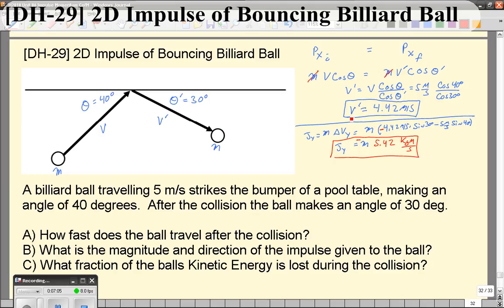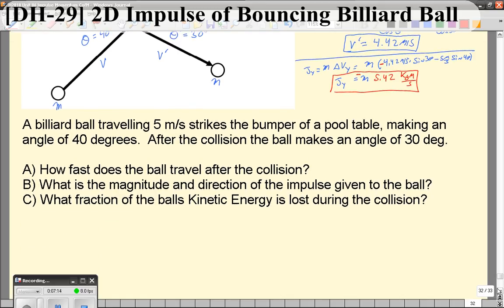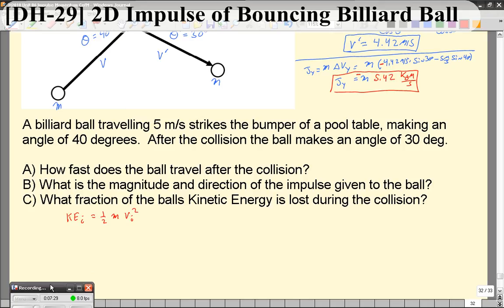We have found the velocity after. The last part of this question asks us to compare the kinetic energy final with the kinetic energy initial. So let's find the KEI is going to be one-half m vi squared. Remember, this is a scalar quantity. Direction does not matter. We don't have to worry about the angle at all here. The number of joules doesn't depend on the angle, just on the raw speed. So that's going to be equal to m over 2 times the initial velocity, which is 5 meters per second squared, which is 25 over 2, or 12.5 m. We'll just leave it in terms of m.